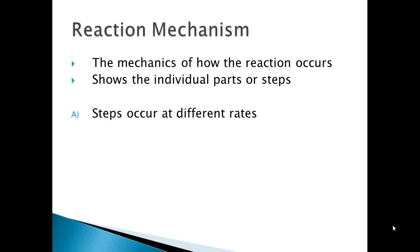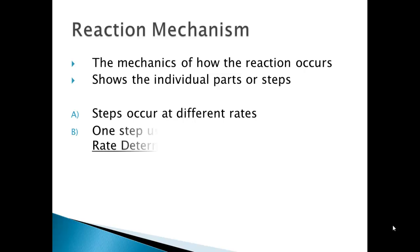These steps often occur at different rates — one step may be very fast, another may be very slow. One of the steps usually affects the rate of reaction the most, and this is called the rate determining step. There's usually one step in the mechanism that is slower than the rest, and that's the one that affects the overall reaction rate the most.